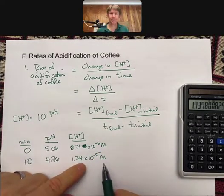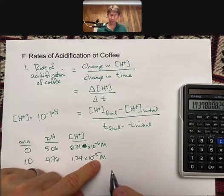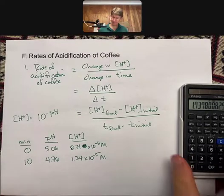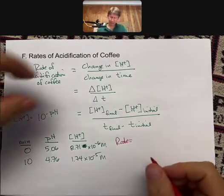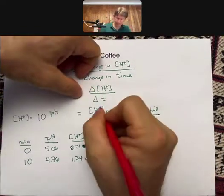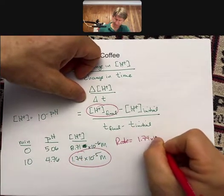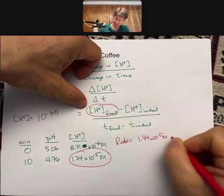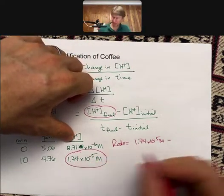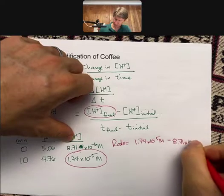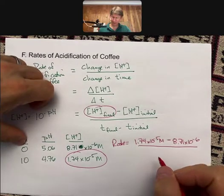You can see that here with 10 to the minus 5 being a larger number than 10 to the minus 6. It's getting a little crowded here, so rate is going to equal my final one, 1.74 times 10 to the minus 5 molarity, minus my initial one, 8.71 times 10 to the minus 6, divided by 10 minutes minus 0 minutes.